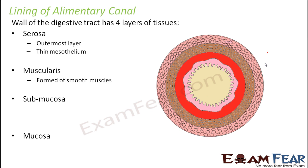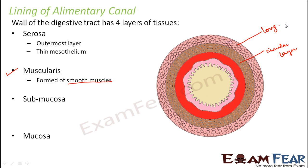Next is muscularis, the layer responsible for all kinds of muscular movements such as peristalsis. So whenever we talked about contraction of muscles, those muscles come from this layer, muscularis, and it is made up of smooth muscles. This layer in turn has 2 sub-layers: a circular layer and a longitudinal layer. These smooth muscles contract and move the intestine, which also helps to move the food down the intestine.